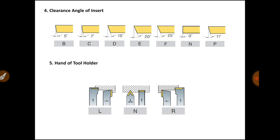Location number 5 denotes the hand of the tool holder. Your tool holder may be left-handed, right-handed, or neutral. In this diagram you can see the left-handed tool holder, neutral tool holder, and right-handed tool holder.